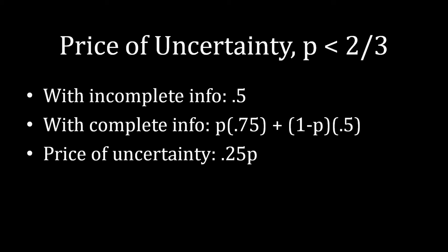In contrast, with complete information, with probability P Albert knows he's facing the weak type, so he can offer 0.25 to Barbara, get her to accept, and keep a payoff of 0.75. With remaining probability 1-P, he knows he's facing the strong type, so he makes the offer that the strong type will accept — which is 1/2 — and keeps the 1/2 remaining for himself.